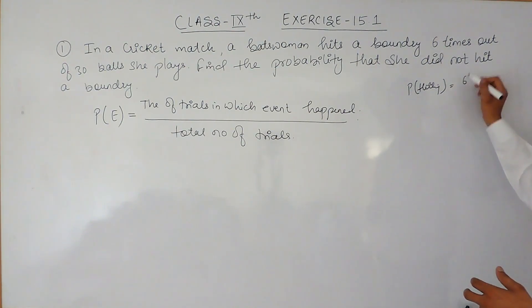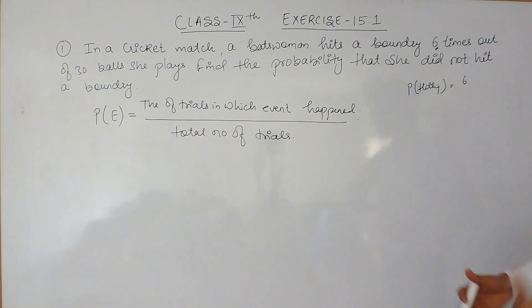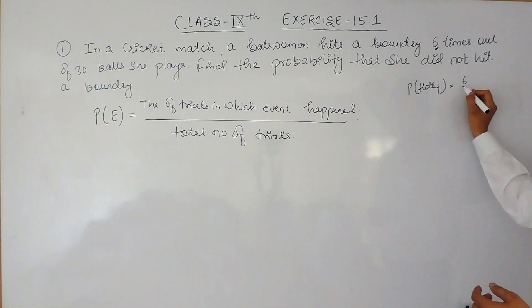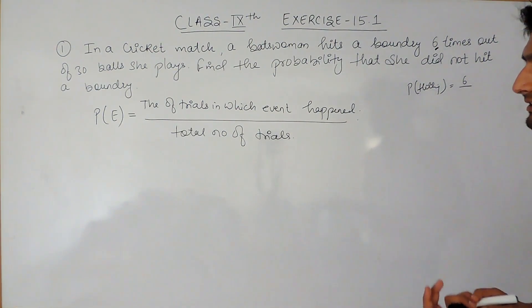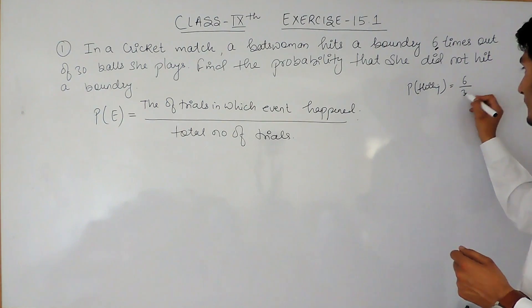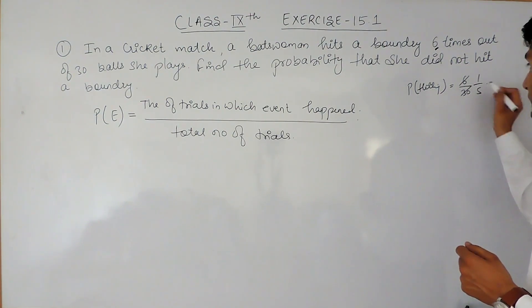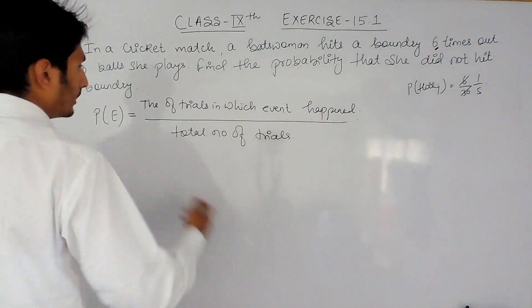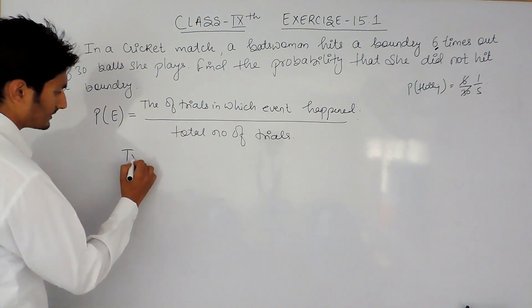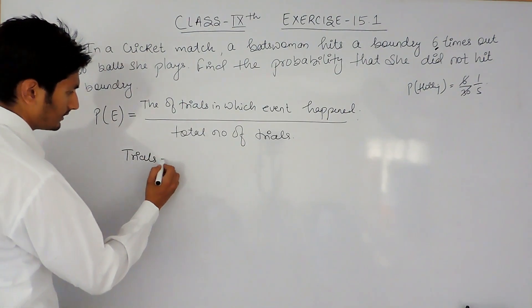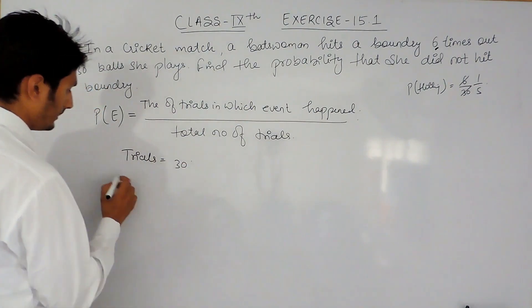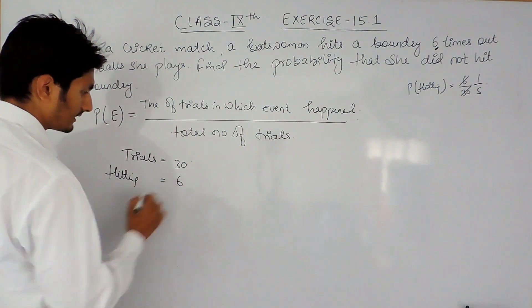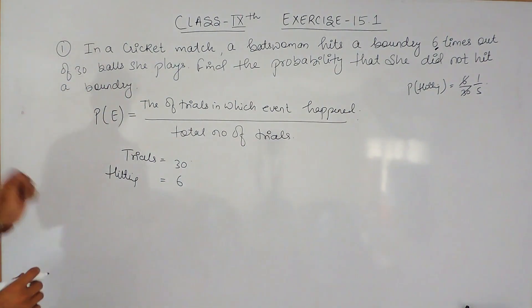The event is hitting a boundary and she hits six times, and the total number of trials is 30. So if we cancel, 1 upon 5 will be the answer. The total number of trials is 30 and she hit the boundary six times.